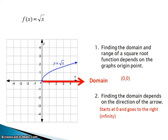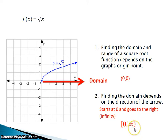It starts at 0 and goes to the right forever, to positive infinity. Using interval notation, we write that domain as [0, ∞). We don't really have to put the positive in front of infinity — it defaults to positive. We use square brackets because x equals 0 is included in this function, but infinity is just a concept, not a real number, so anytime we're talking about infinity or negative infinity, we always use parentheses to indicate the interval is open.